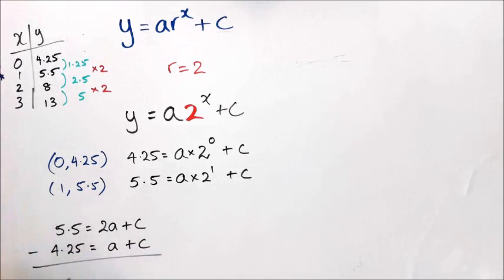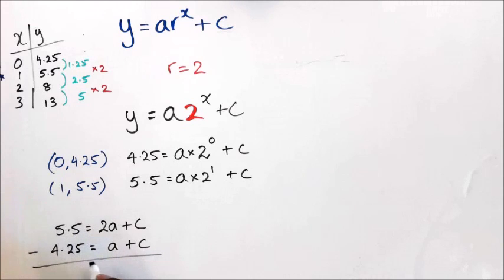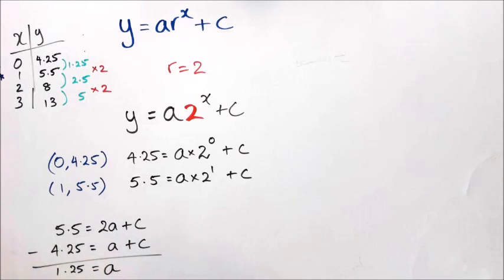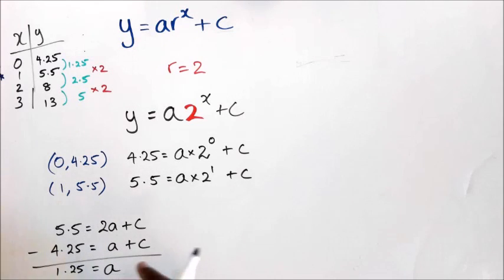With simultaneous equations, I subtract: 5.5 minus 4.25 gives 1.25, and 2a minus a equals a. So in this case, a equals 1.25.